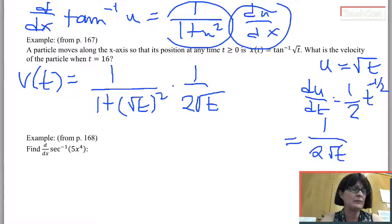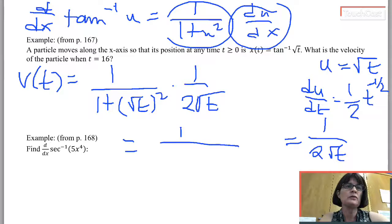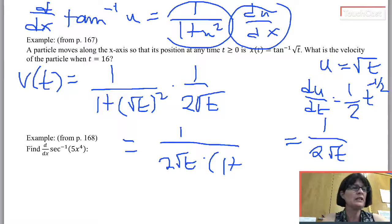That's a fine answer. You don't have to simplify that. Just know if you could simplify it. And that's the same as 1 over 2 square root of t times 1 plus, square root of t squared is t.